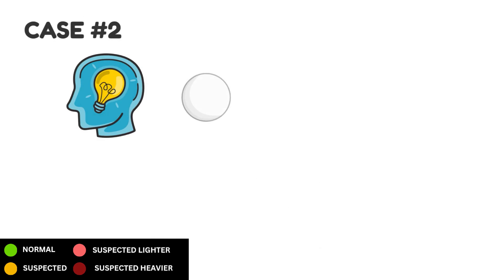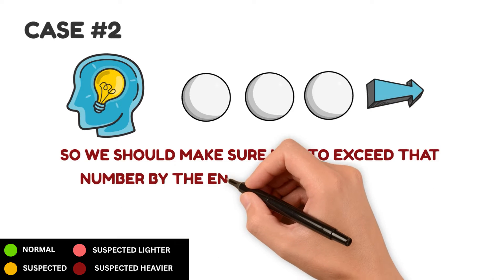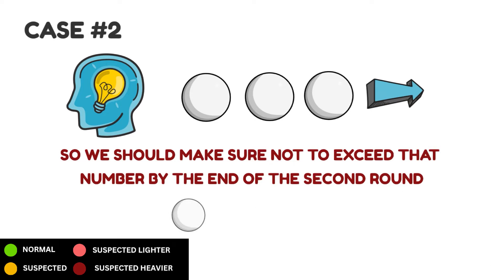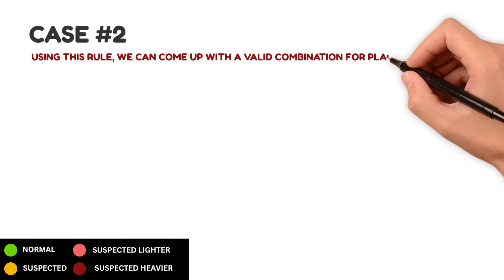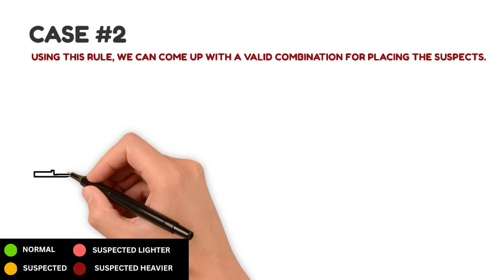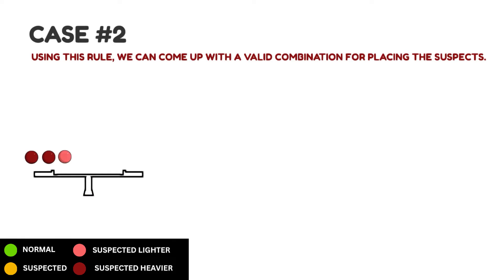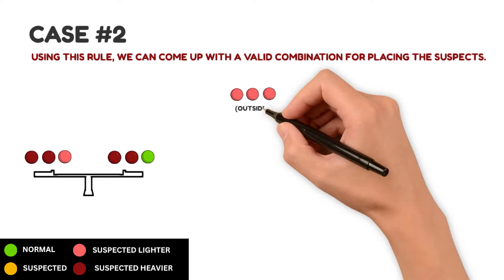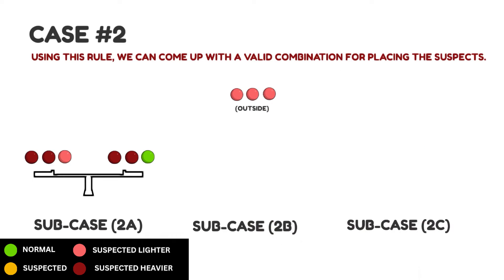In the final round, we can have a maximum of 3 suspects, so we should make sure not to exceed that number by the end of the second round. Otherwise, we might end up with 4 suspects, complicating the process. Using this rule, we can come up with a valid combination for placing the suspects. Let's arrange them as illustrated. Now we have 3 potential sub-cases: balance, shift left, or shift right.